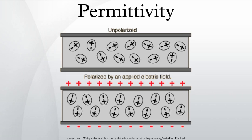In general, permittivity is not a constant, as it can vary with the position in the medium, the frequency of the field applied, humidity, temperature, and other parameters. In a nonlinear medium, the permittivity can depend on the strength of the electric field. Permittivity as a function of frequency can take on real or complex values.